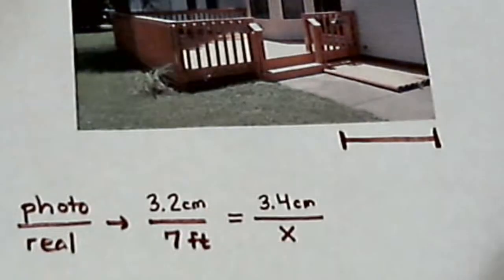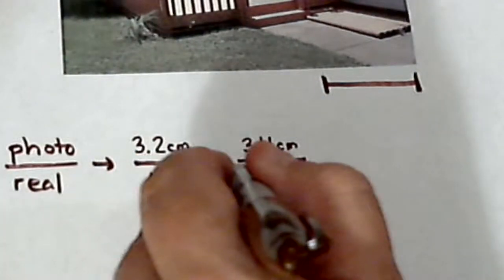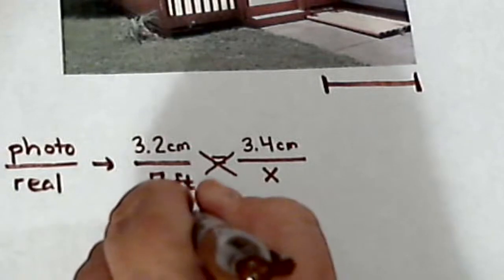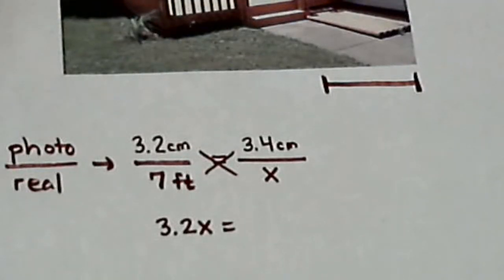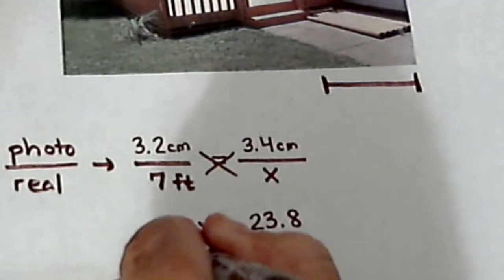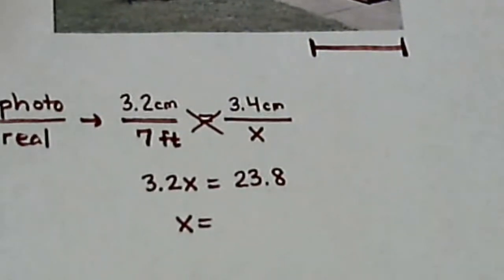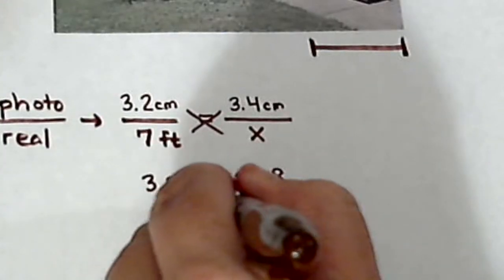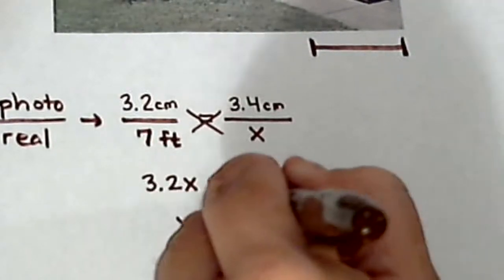So we can tell it's going to be a little bit above 7 feet, but how much? If we cross multiply, we get 3.2x, and if we divide by 3.2, we get about 7.4 feet.